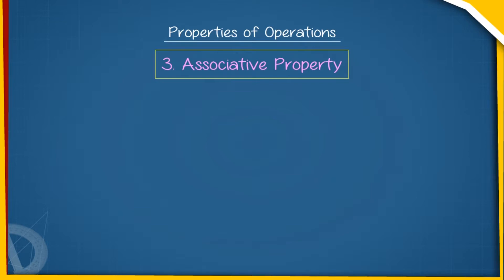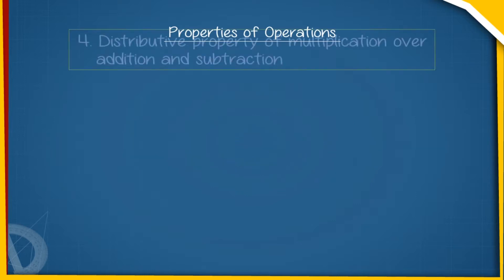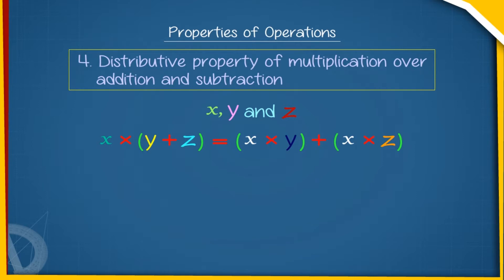3. Associative Property: For rational numbers X, Y, and Z, the addition and multiplication are associative. 4. Distributive Property of Multiplication over Addition and Subtraction: For rational numbers X, Y, and Z, X into Y minus Z equals X multiplied by Y minus X multiplied by Z.